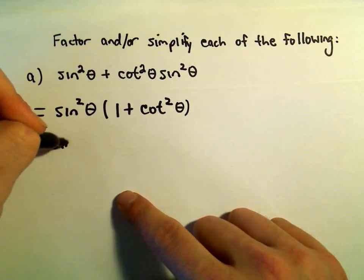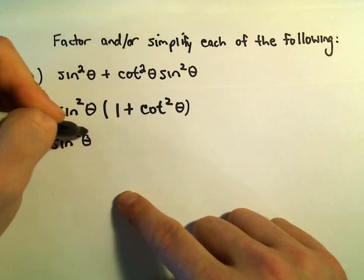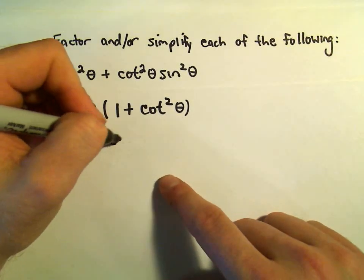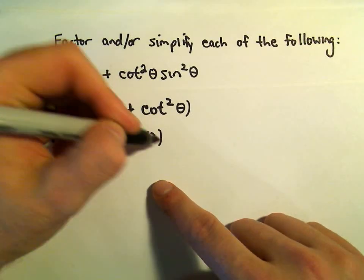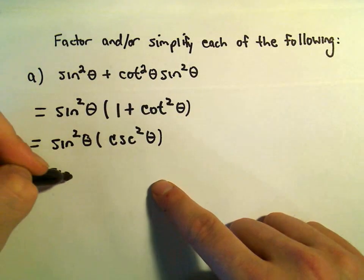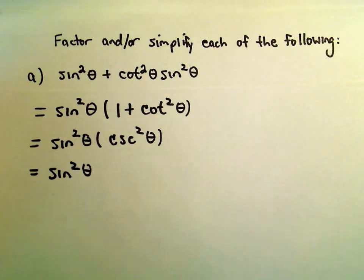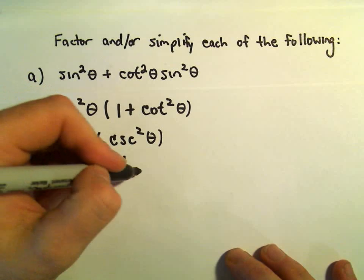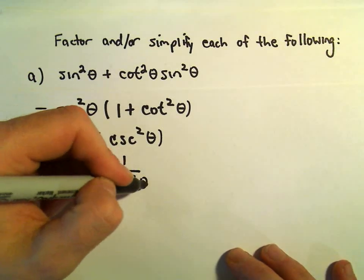But recall there's an identity for 1 plus cotangent squared theta, that is cosecant squared of theta. But what is cosecant squared theta? That's the same thing as 1 over sine squared theta.